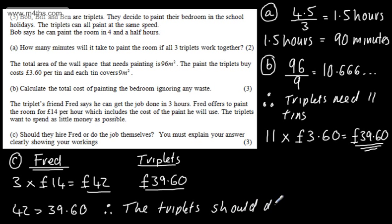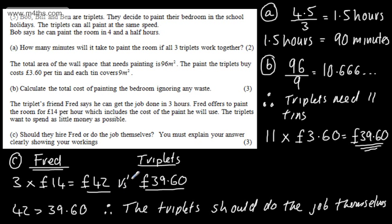Just to recap: we worked out that Fred doing the job at £14 per hour for three hours gives £42, and we compared that versus £39.60 for the triplets doing it themselves. There are three marks in the final part — one mark for the Fred calculation, one mark for comparing £42 versus £39.60, and one mark for the concluding statement.